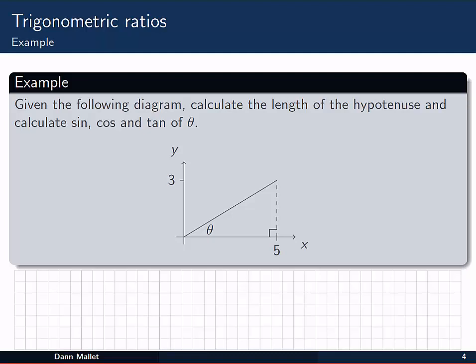Let's have a look at this example. We're given this picture where we have some point in the Cartesian plane here, which would have coordinates 5 and 3. We're asked to calculate the length of the hypotenuse, that's this line here, and calculate the sine, cosine, and tangent of theta.